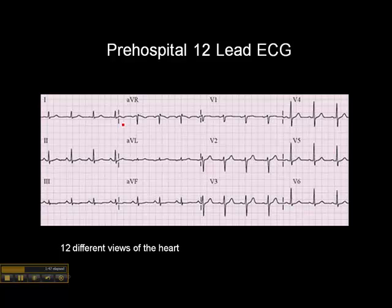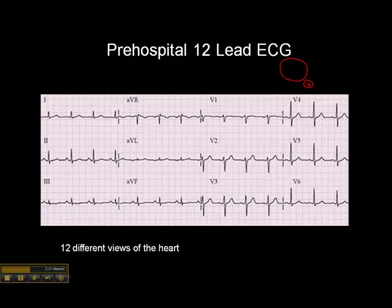Whether the QRS complex is deflected upwards or downwards — as is the case in V1 here — depends on one of two things: either where the electrode is located in relation to the myocardium, or whether there's some kind of pathology that exists, such as an old infarction. But in a normal healthy heart, it's determined by lead placement.